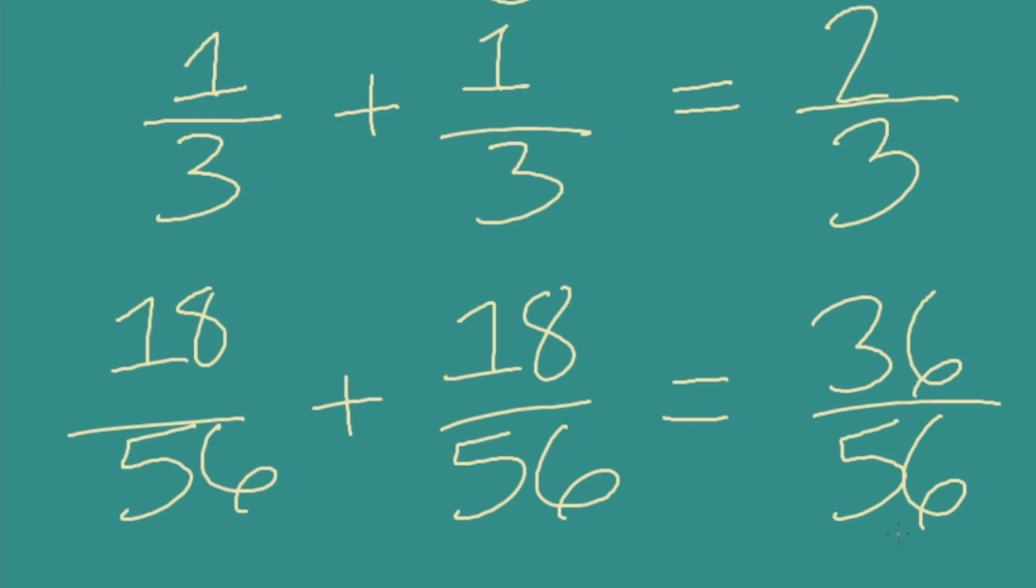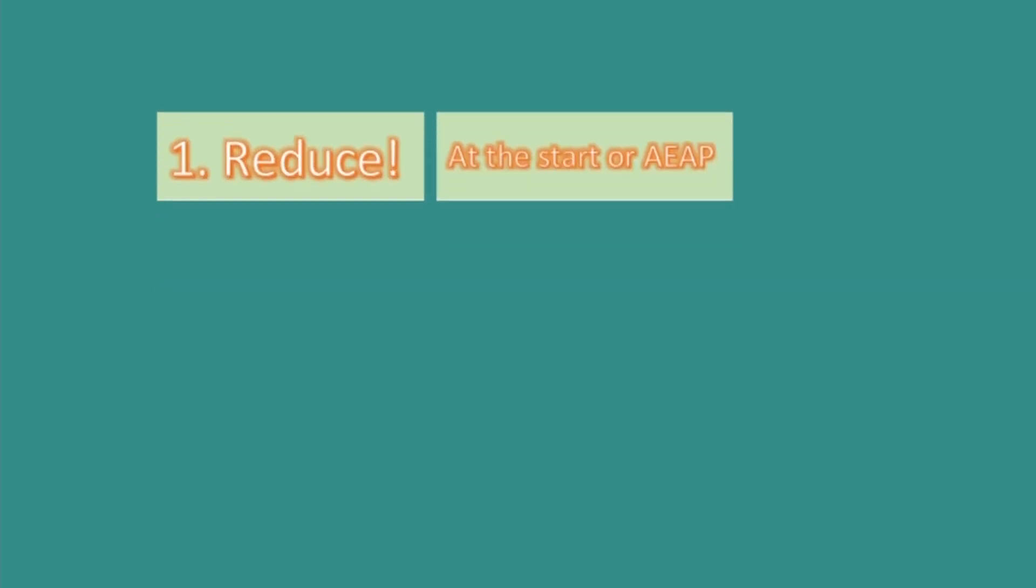The good news is both will get you to the right spot. But 36/54 is so much larger and harder to work with. And you're going to have to reduce it anyway at the end. And it's going to reduce to 2/3.